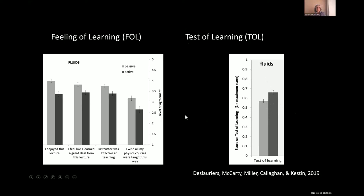This tells us we all have a mismatch between how we feel we learn best and how we actually learn best. This finding has been replicated across study groups, different conditions, and different skills — for example, reading and rereading versus actively recalling. In all conditions, findings indicate we feel we learn better when we're more passive. It's called the illusion of fluency. Even reading a book and feeling you really get it is still far less effective than actively doing something with the content.